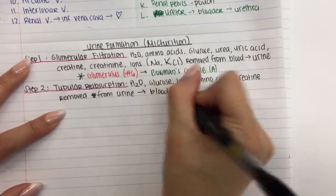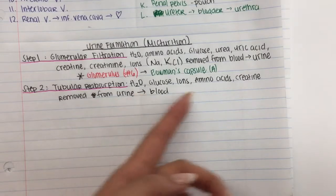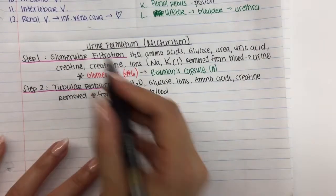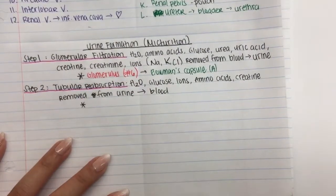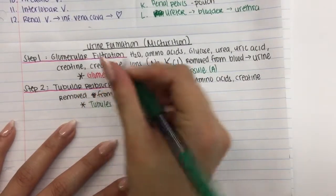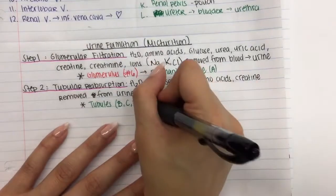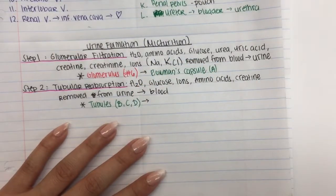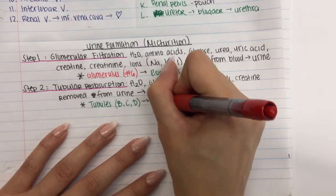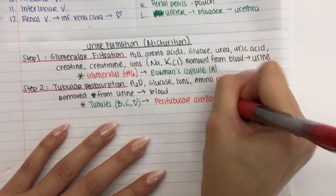It will actually form your blood plasma — technically blood plasma, because blood itself is plasma plus platelets with red and white blood cells, so all this stuff is actually plasma. That reabsorption is going to occur around the proximal convoluted tubule, the descending limb, and the ascending limb — I'm going to write tubules, labeled as letters B, C, and D in the diagram. All of that stuff will go back into the blood in the peritubular capillaries, which is number eight in the diagram.